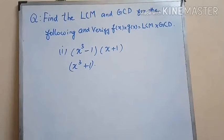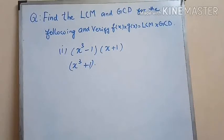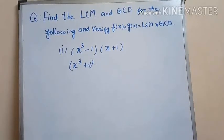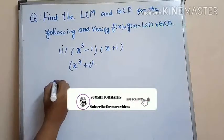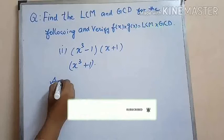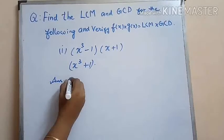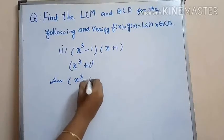and verify that f(x) times g(x) is equal to LCM times GCD. So here we have f(x) as x cubed minus 1 times x plus 1, and g(x) is x cubed plus 1.